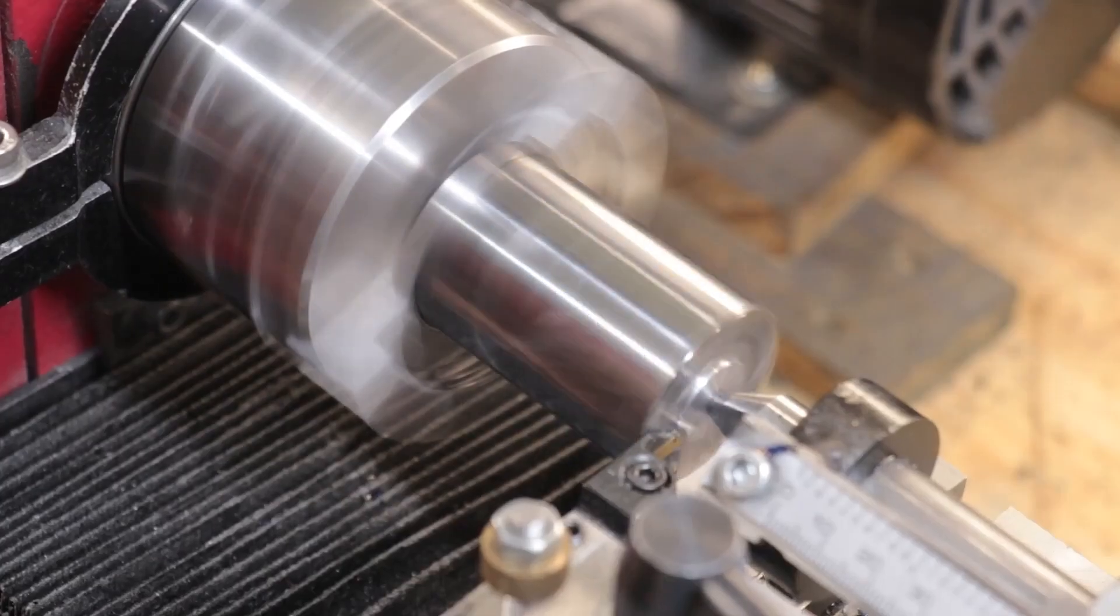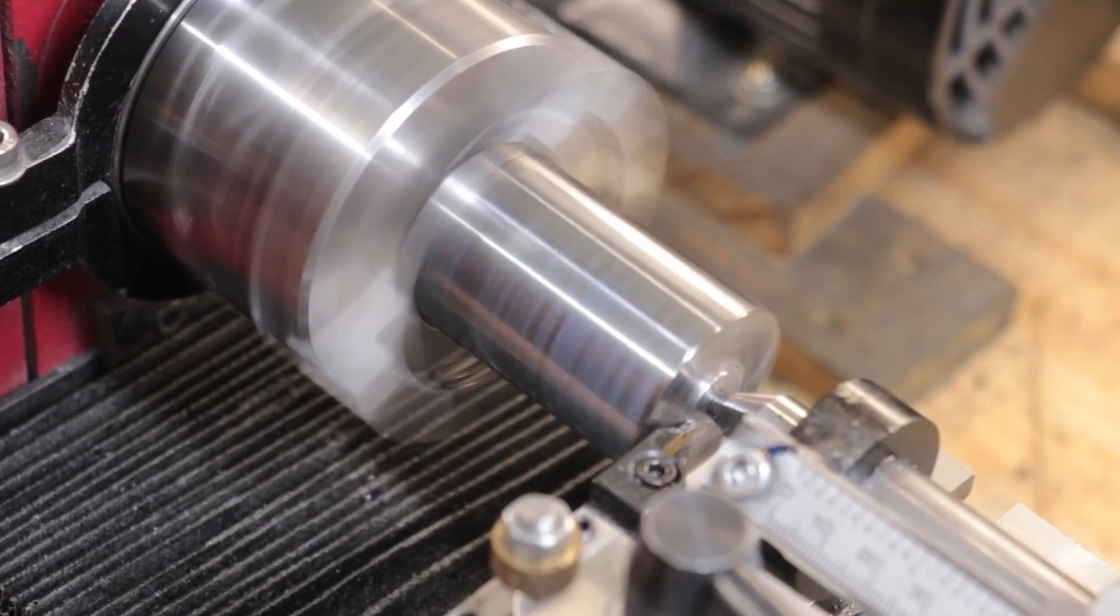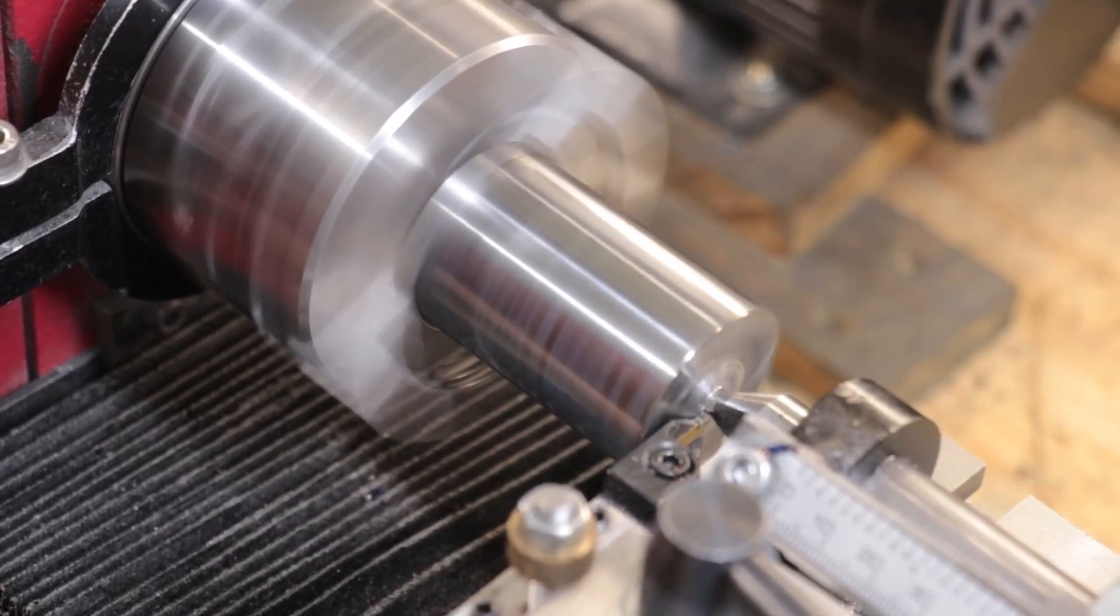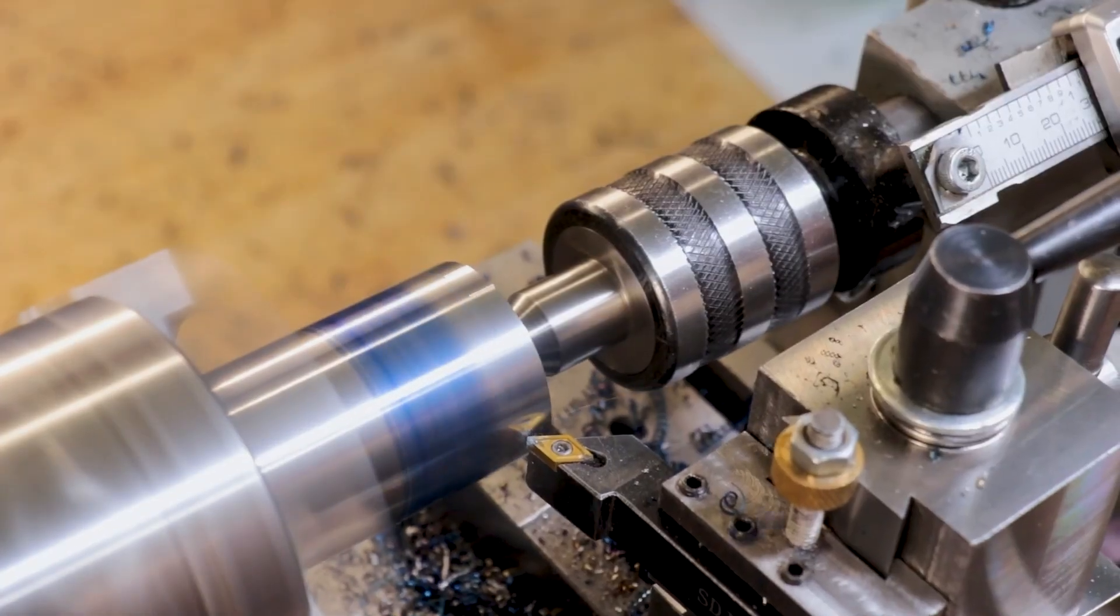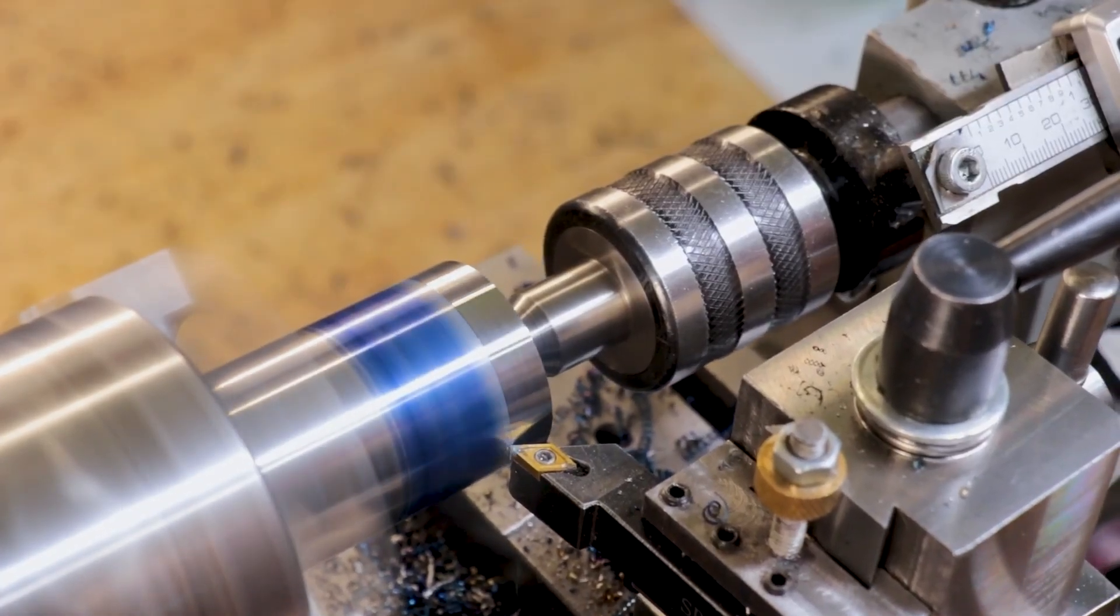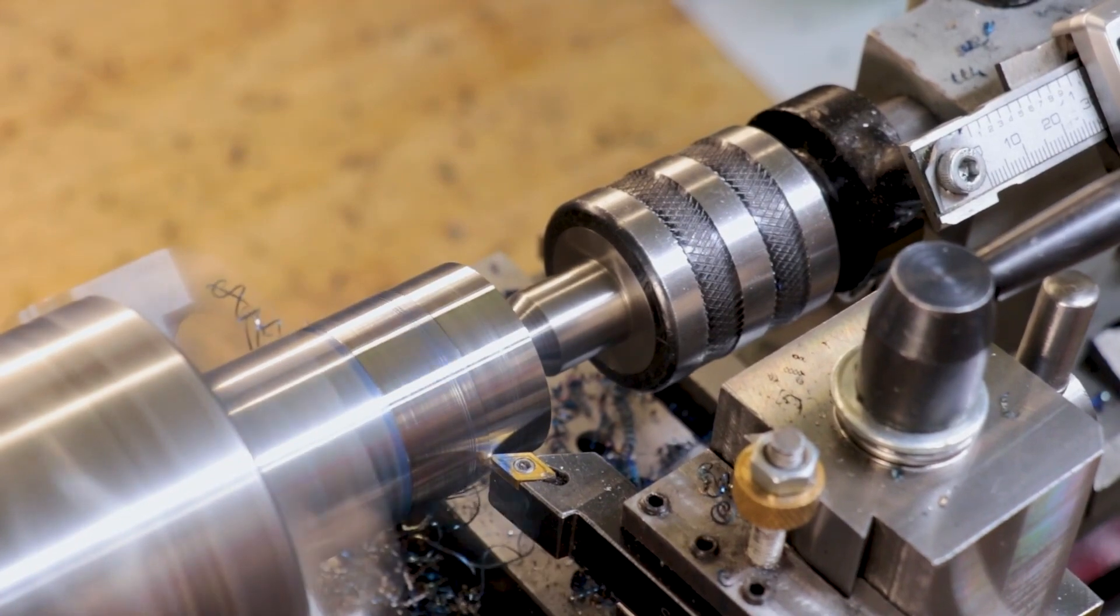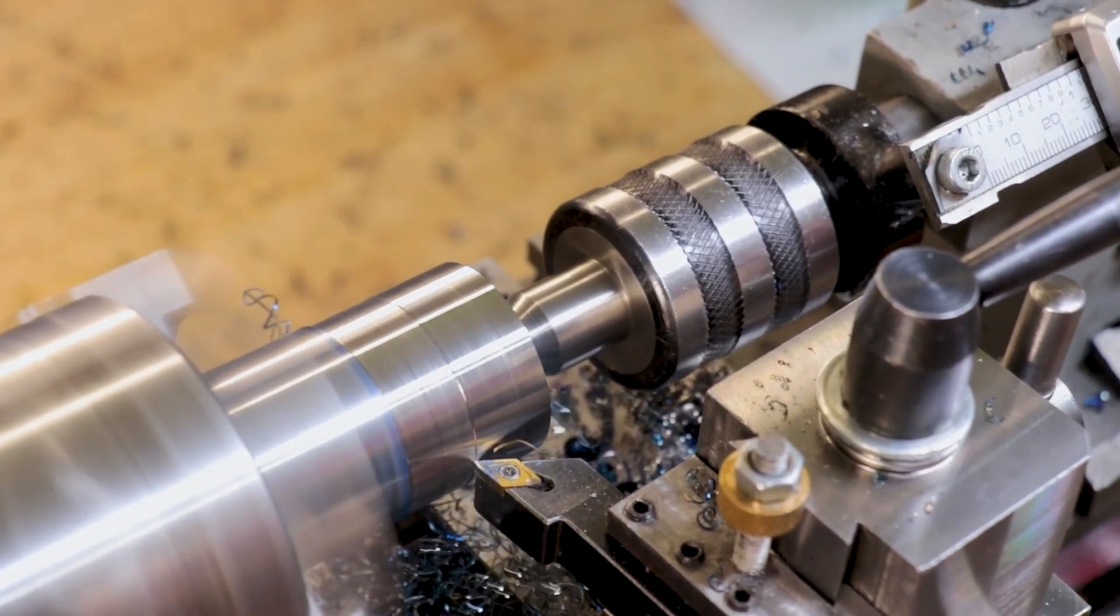Now I have turned 4140 before and I have milled it, but on much bigger machinery, and thankfully it wasn't too much different here. As far as machining goes, it's actually a pretty nice material to turn in that you can get relatively good surface finishes without too much trouble.